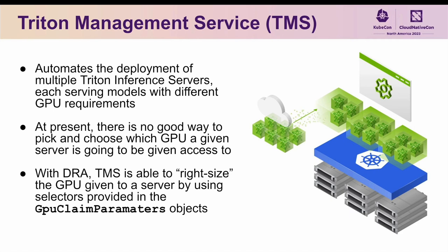By integrating with our DRA resource driver for GPUs, TMS is now able to right-size the GPU given to a particular inference server. It does this by translating a model's GPU requirements into a set of selectors, building a GPU claim parameters object from it, and then referencing that in a resource claim.